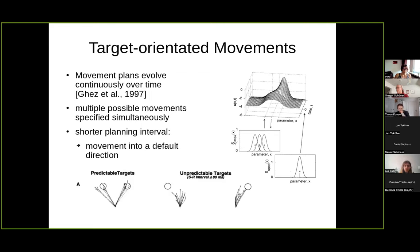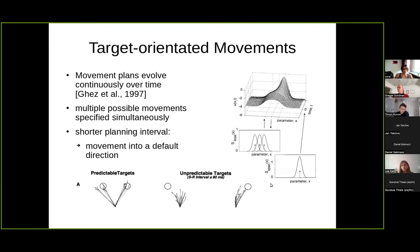DFT can explain this. If you have two targets near to each other — or three in this case — you would have a broad peak over all target locations, and then later on when the correct target is cued, this would specify to one peak at the target location. So we know that for uncertain targets you have these average trajectories and average movements, and we have possible explanations for that with Dynamic Field Theory.